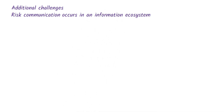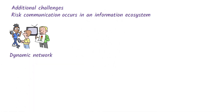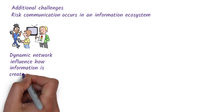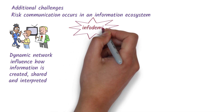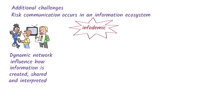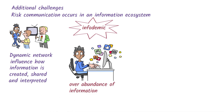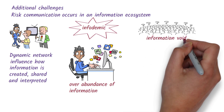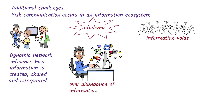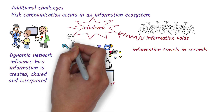Today's public health emergencies bring additional challenges. Risk communication takes place within a broader information ecosystem — a dynamic network of sources, channels, and people that influence how information is created, shared, and interpreted. During a health event, an infodemic can occur. The World Health Organization describes an infodemic as an overabundance of information, accurate or not, in the digital and physical space accompanying an acute health event. Information voids — gaps in the availability, accessibility, or clarity of trustworthy information — can fuel the infodemic. In today's interconnected digital world, information travels in seconds, making it hard to tell what's real and what's not.